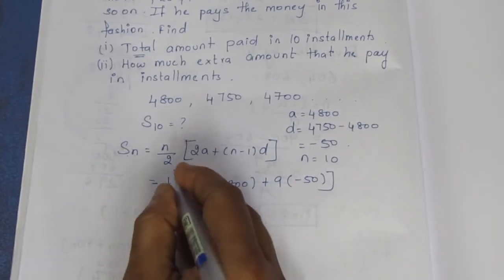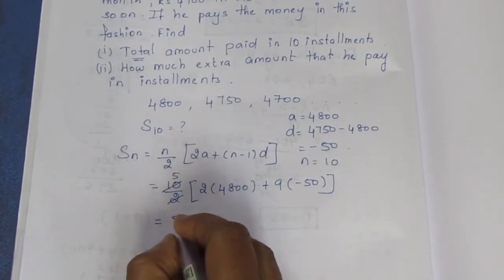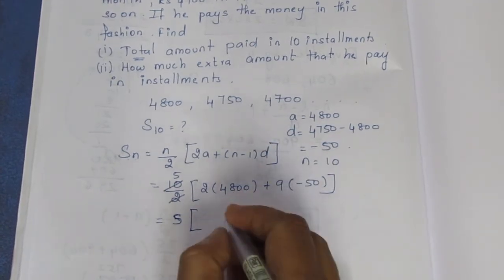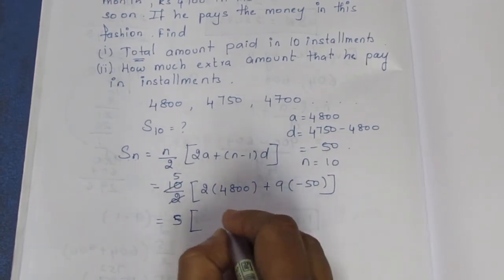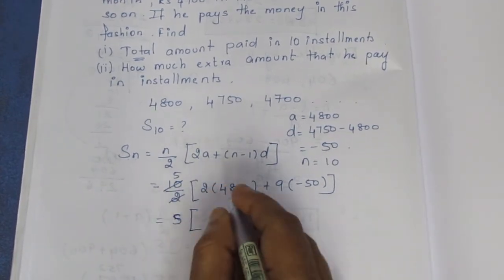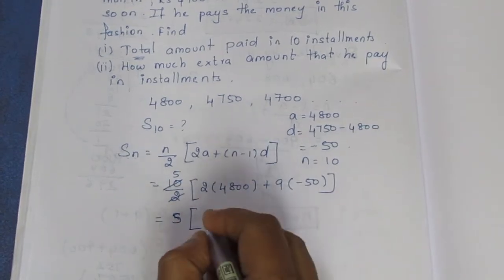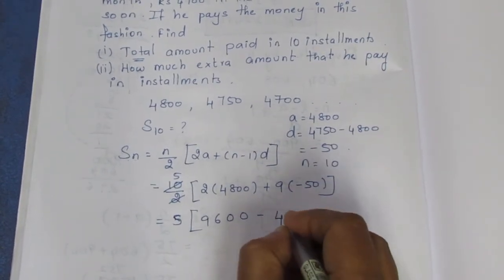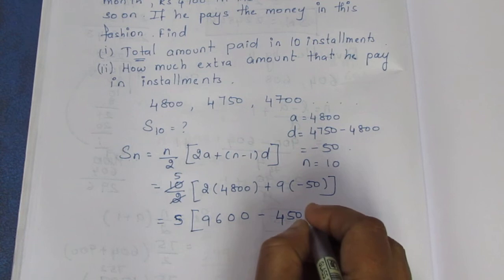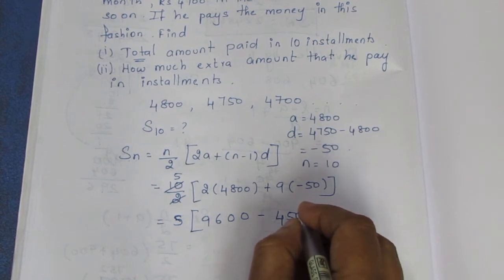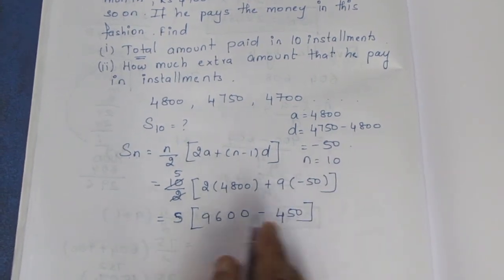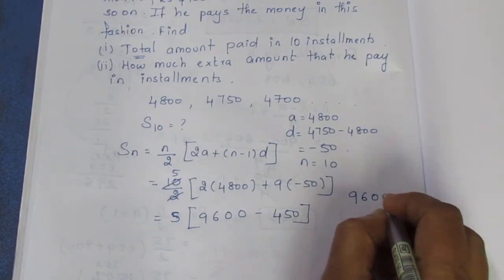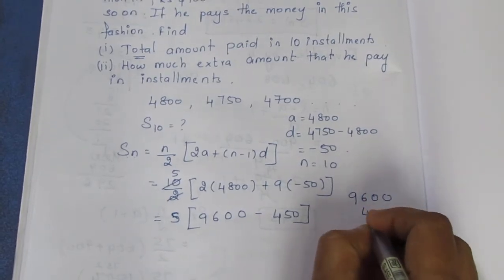Now we solve it. 10 divided by 2 gives 5. We multiply: 2 times 4800 gives 9600. Then 9 times minus 50 gives minus 450. So inside the bracket we have 9600 minus 450, which equals 9150.